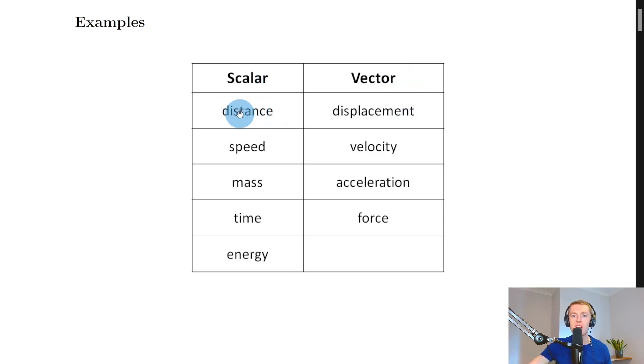So starting over here, we have distance as a scalar, but we've just said that displacement is the vector equivalent of distance. So that's why I've sort of paired these up side by side. So displacement is the same as a distance with a direction.